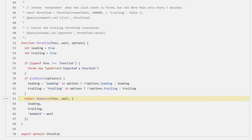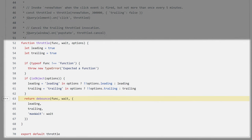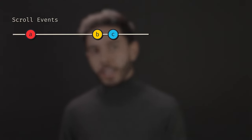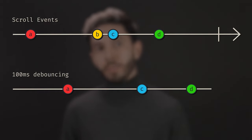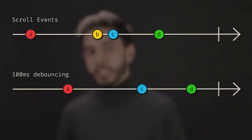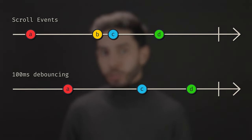Lodash also has debounce, which is similar to throttling. They are so similar that if you enable some options in Lodash's debounce implementation, you get throttling. The differences I'm about to present are considering debounce with no options, only its default behavior. Debouncing the scroll events by 100 milliseconds means only letting a scroll event pass after 100 milliseconds has passed without any scroll events.